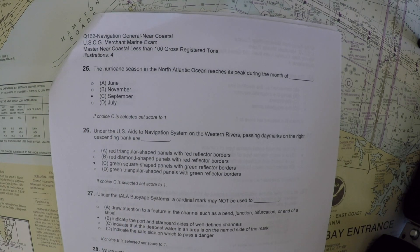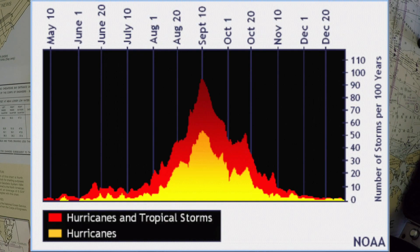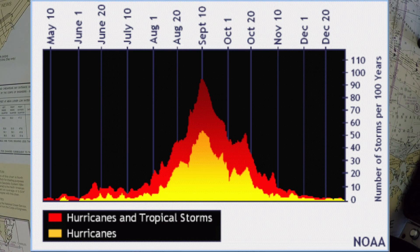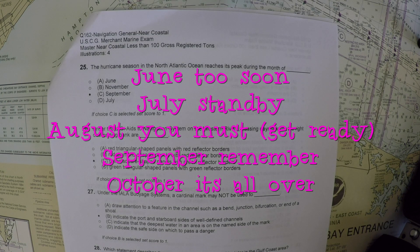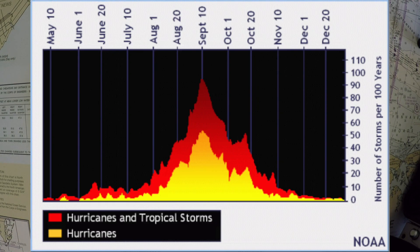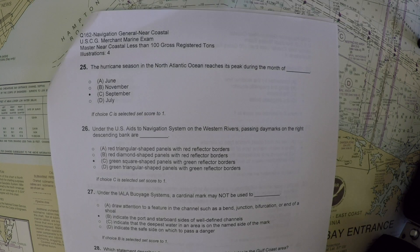For number 25, the hurricane season in the North Atlantic reaches its peak during which month? Looking at this graph provided by NOAA, you can see that September is the correct answer. There's a memory aid: June — too soon; July — standby; August — you must (meaning you must prepare); September — remember, that's the busiest season; and October — it's all over. As climate changes, storms have been seen to fall more into the earlier and later portions of this curve, but September remains by far the peak.